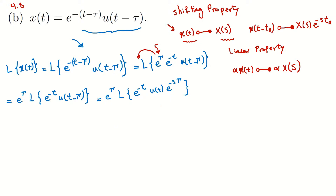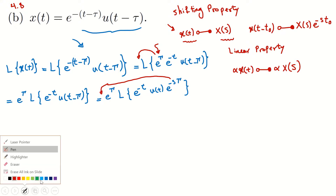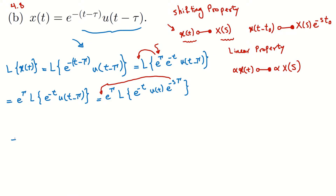Now from the shifting property, we know the Laplace transform of that expression equals e to the power of minus s·τ times the Laplace transform of u(t). So I can replace that and write it as e to the power of τ times the Laplace transform of e to the power of minus t times u(t), times e to the power of minus s·τ. Since e to the power of minus s·τ is not a function of t, I can take it out, giving e to the power of τ times e to the power of minus s·τ times the Laplace transform of e to the power of minus t times u(t).